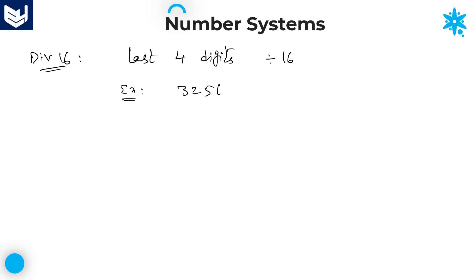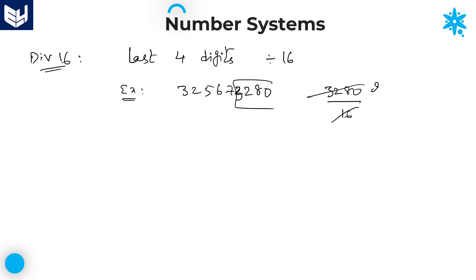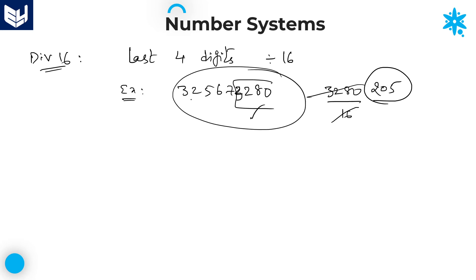Whatever big number you have taken, do not take the entire number — take only the last 4 digits. Here the last 4 digits are 3280. Check whether 3280 is divisible by 16: 16 times 205 equals 3280. So if the last 4 digits are divisible by 16, automatically the entire number is divisible by 16. That is the divisibility rule of 16.